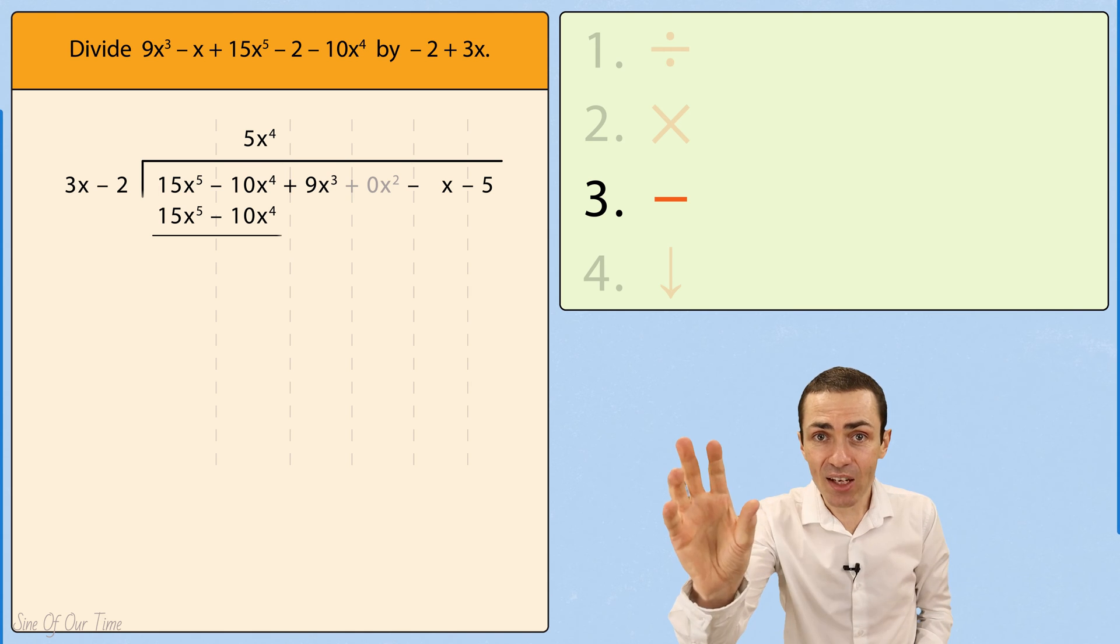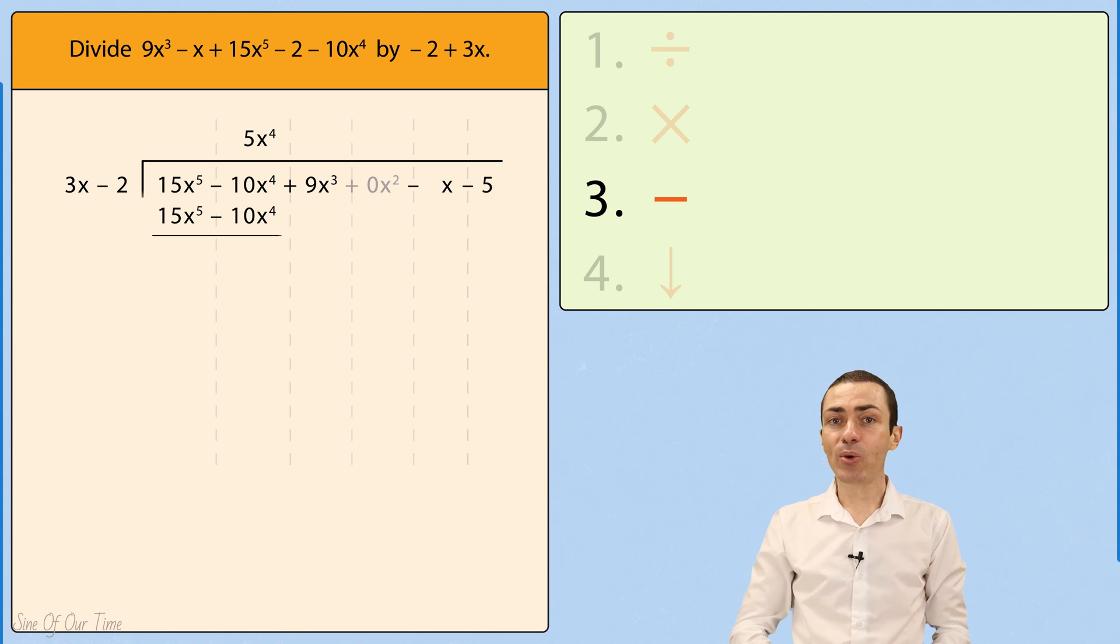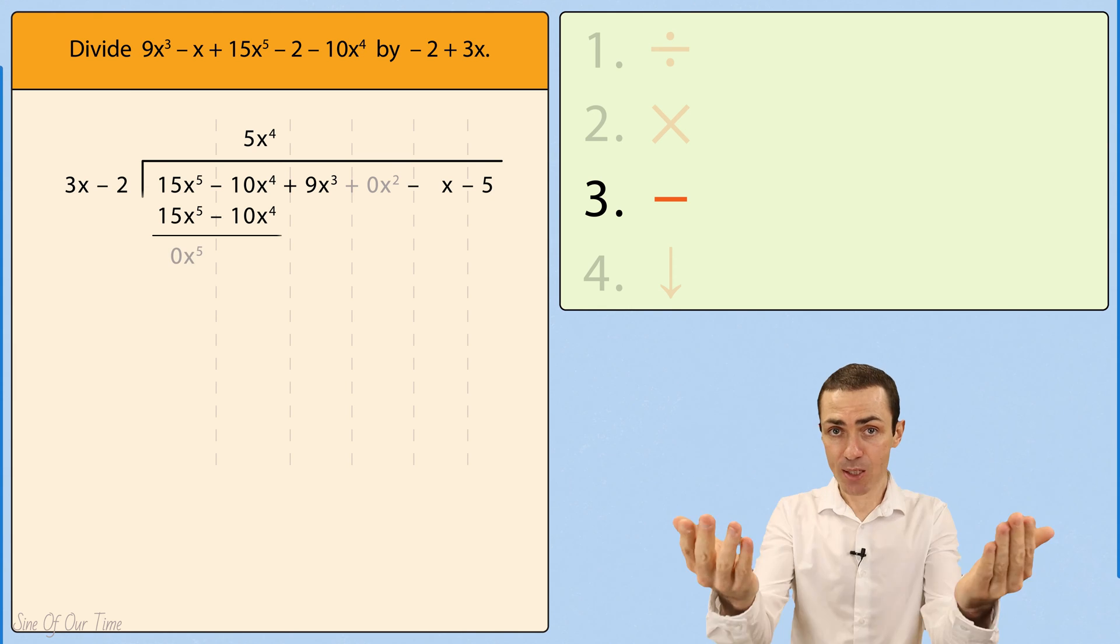When we take that 15x to the power of 5, and we subtract 15x to the power of 5, we are left with 0x to the power of 5, which is what we expect.